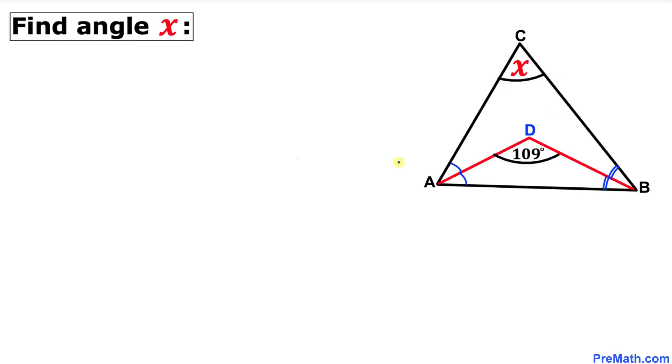Let's get started with the solution. Here's the first step. We know these two angles are equal. I'll call this angle alpha, so this angle is also alpha. Likewise, these two angles are equal as well.